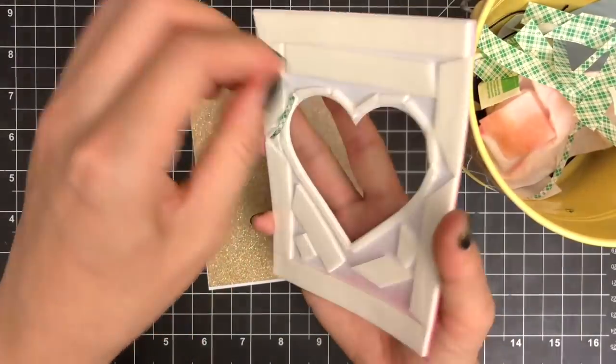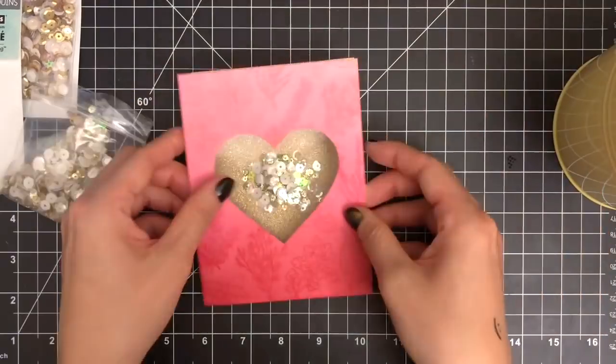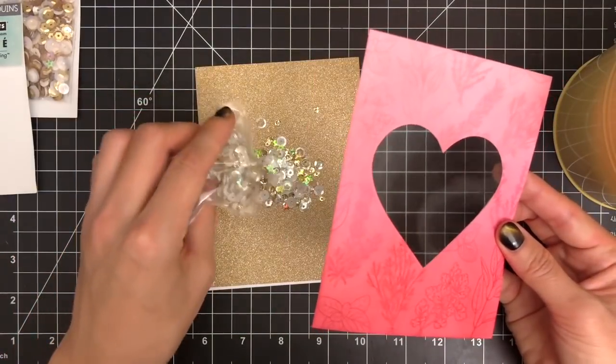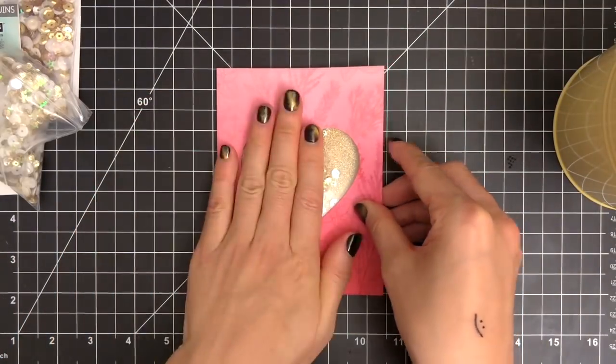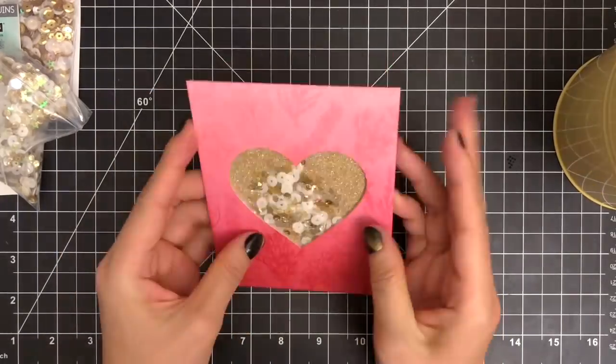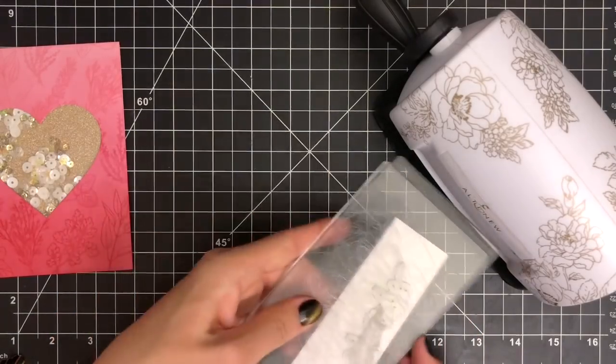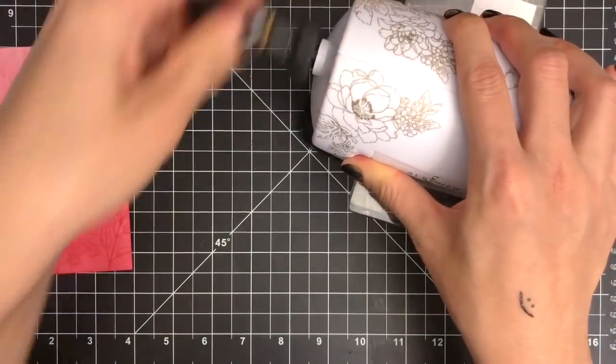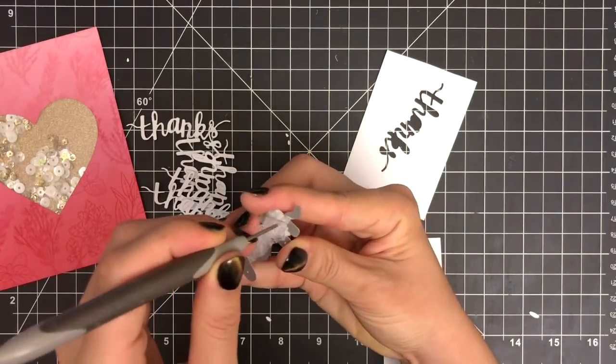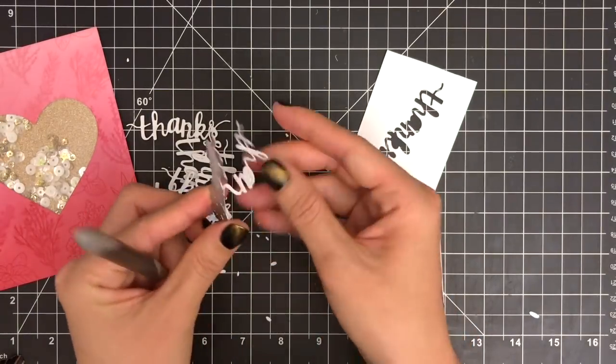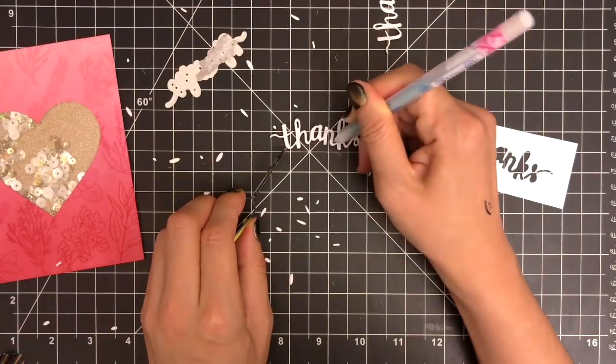After placing champagne sequin mix over my stamped panel, I'm going to mount my stamped panel over the gold card base. It's now time to add my sentiment. I'm going to pull out the die from Hero Arts Thanks Stamp and Cut. And I'll be die cutting the word seven times out of white cardstock and mounting them together to make it thick using a glue pen.